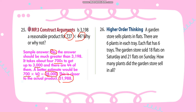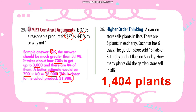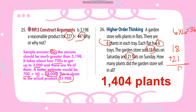Number 26: A garden store sells plants in flats. There are 6 plants in each tray, and each flat has 6 trays. The garden store sold 18 flats on Saturday and 21 flats on Sunday. How many plants did the garden store sell in all? The answer is 1,404 plants. First multiply 6 by 6, which equals 36. Then add 18 plus 21 to get 39 total flats. Then 36 multiplied by 39 gives 1,404 plants.